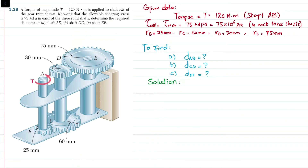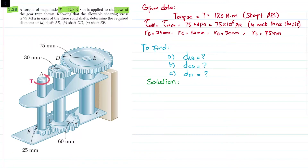Welcome back. Problem 3.28. In this problem, a torque of magnitude T = 120 Newton·meter is applied on shaft AB of the gear train. This is shaft AB of the gear train. Knowing that the allowable shearing stress is 75 MPa in each of the three solid shafts, determine the required diameter of shaft AB, shaft CD, and shaft EF. You can see this is shaft AB, this is shaft CD, and this is shaft EF.